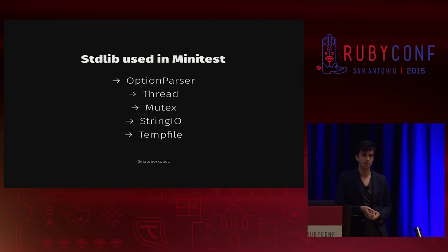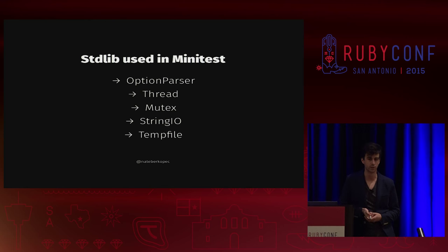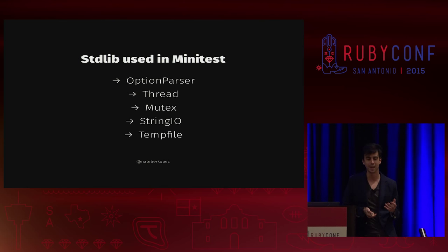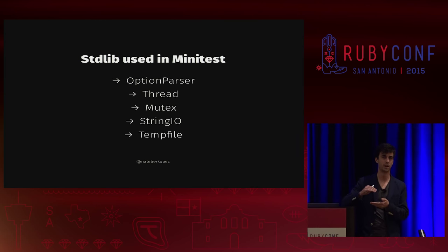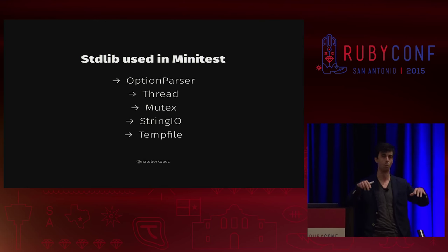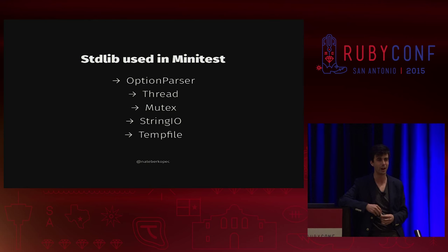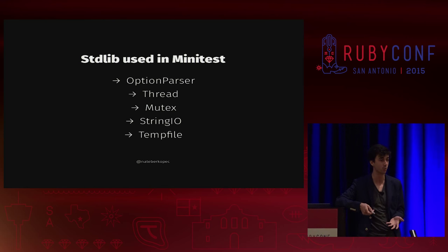Standard lib is used very heavily in the Minitest source code — we see things like OptionParser, Thread, Mutex, StringIO, and Tempfile. And in something I've never really seen before, Minitest will use your system diff tool when printing the difference between two large objects. If you assert_equal two huge arrays and one thing is different, Minitest will use the system diff to figure out what was different.